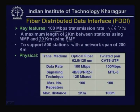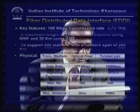FDDI can support as many as 500 stations and a network span as large as 200 kilometers, so it cannot be considered just a local area network — it encompasses a much larger area and may be considered a metropolitan area network. It can cover a very big campus.